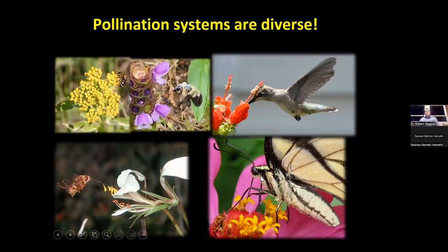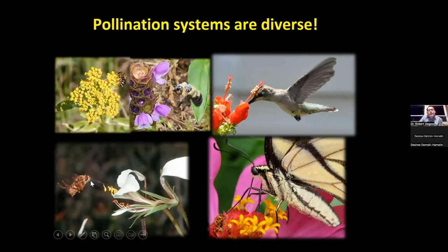Looking at pollination systems, there's a lot of attention on bees because they're important agriculturally, but in an ecological context all systems are equally important. Some plants need small bees, some large-bodied bees, some long-tongued animals, some short-tongued. Some systems are generalized — many different animal types can function as pollinators — and some are highly specialized, like a fly species and plant species that are mutually dependent. If we lose the plant, the fly species goes extinct. If we lose the fly, the plant species goes extinct.